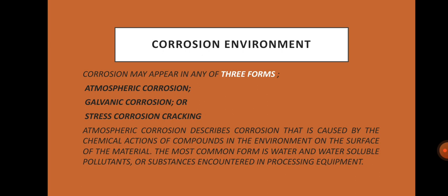Corrosion environments: corrosion may appear in any of three forms — atmospheric corrosion, galvanic corrosion, or stress corrosion cracking. Atmospheric corrosion describes corrosion caused by chemical actions and compounds in the environment on the surface of the material, the most common form involving water, water-soluble pollutants, or substances encountered in processing equipment. Corrosion causes plant shutdowns, waste of valuable resources, loss or contamination of product, reduced efficiency, costly maintenance, and expensive over-design.